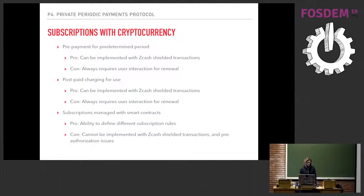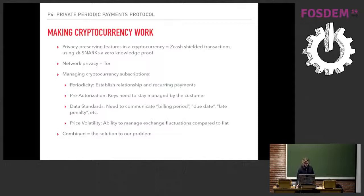We weren't satisfied with what's out there right now, so we thought: what could we do differently? We talked about how to make cryptocurrency work for our needs, together with privacy. First, we looked at privacy-preserving features in cryptocurrency like Zcash shielded transactions. We also thought about networked privacy, so we looked at Tor. And we thought about how to manage cryptocurrency subscriptions themselves — including the periodicity problem and preauthorization — making sure keys stay with the people.